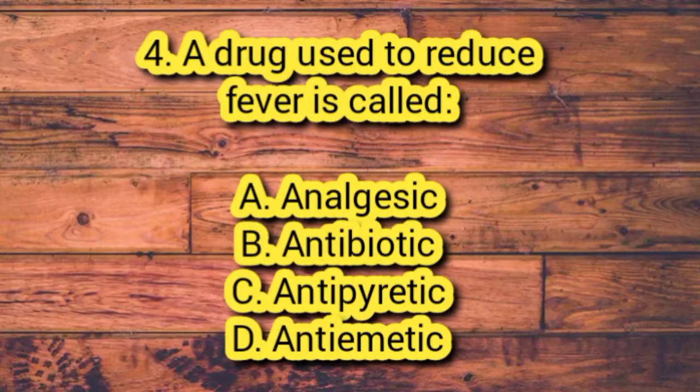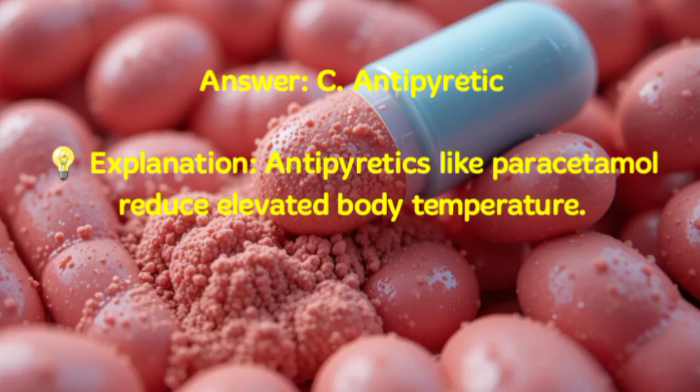Number 4. A drug used to reduce fever is called? A. Analgesic. B. Antibiotic. C. Antipyretic. D. Antiemetic. Answer: C. Antipyretic. Explanation: Antipyretics like paracetamol reduce elevated body temperature.